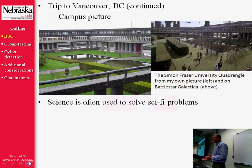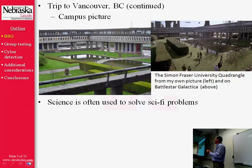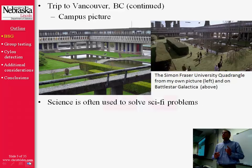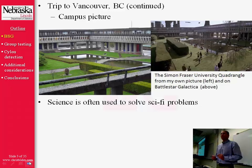This whole trip got me thinking more about how science is often used to solve sci-fi problems. On sci-fi TV shows, movies, and in books, you so often see science as the tool being used to rescue characters from the brink of disaster. Well, why couldn't that science be statistical science? Today I'm going to talk about one specific problem that occurred on Battlestar Galactica and how statistical science could have been used to solve it and perhaps dramatically change the course of the show.